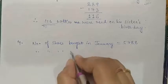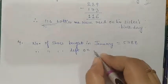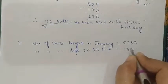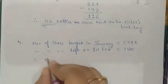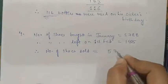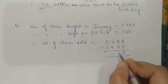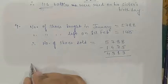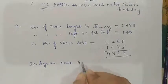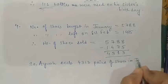Number of shoes left on 1st February is equal to 1,475. Therefore, we will write: number of shoes sold equals 5,788 minus 1,475. We subtract: 8 minus 5 is 3, 8 minus 7 is 1, 7 minus 4 is 3, 5 minus 1 is 4. So Ayush sells 4,313 pairs of shoes in January.